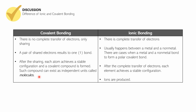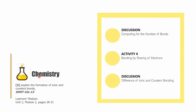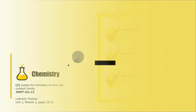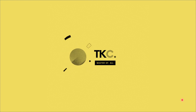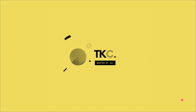We are done with the discussion on ionic and covalent bonding — those are the basic differences. This is Sir Carlos from Chemistry. This session was divided into three parts: a discussion, an activity, and another discussion. We are not yet finished with Learning Competency 3 — the next video will continue covering the formation of ionic and covalent bonds. Please subscribe, and message me on Facebook if you want a copy of this presentation. See you in the next part!